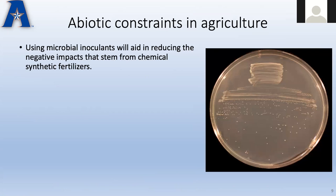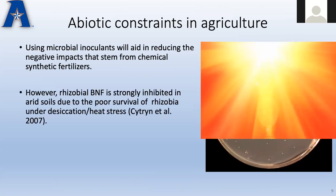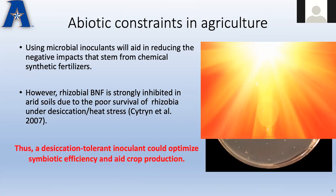So microbial inoculants will aid in reducing the negative impacts of fertilizers — problem solved, right? I wish. Nothing is ever that simple. In Texas, heat happens. Rhizobial biological nitrogen fixation is strongly inhibited in arid soils due to poor survival of rhizobia under desiccation or heat stress. Not only do the bacteria dry out and die, but drought also reduces water potentials in the soils so that flavonoids and nod factors can't be relayed properly. Even if symbiosis does form, the plant can't maintain the feedback of sugars and nitrogen because the water potential isn't there. Thus, a desiccation-tolerant inoculant could optimize symbiotic efficiency and aid crop production.